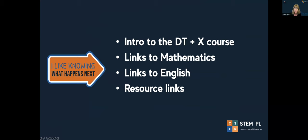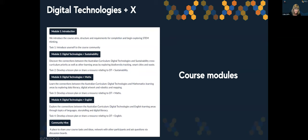What we plan to do is introduce you to elements of the Digital Technologies Plus X course that we have just launched, highlighting links to mathematics and English, and making sure you have a whole lot of resources at the end. Our Digital Technologies course has three core modules. We have one on sustainability — Rebecca Vivian has already created a webinar on that. Today we're covering Digital Technologies Plus Maths and Digital Technologies Plus English. Everything you see today will be based on elements within that online course.